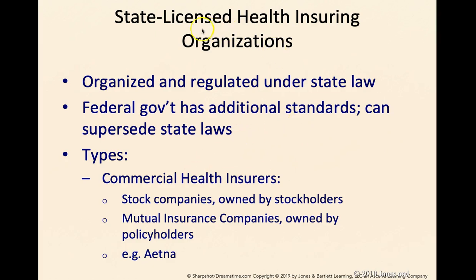Let's talk about the different types of state-licensed health insurance organizations. The first type is commercial health insurers — these are the for-profit health insurance companies. They are for-profit because they are stock companies in which stocks are owned by stockholders, and at the end of the revenue period those stockholders get dividends. Mutual insurance companies operate similarly, but whoever has a policy or is a subscriber automatically becomes an owner or stockholder of the company. A perfect example is Aetna.